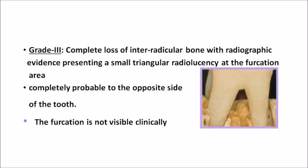Grade three: complete loss of interradicular bone with radiographic evidence presenting as triangular radiolucency. It is a through-and-through defect — when you probe from the buccal you can see the probe on the lingual side. There is through-and-through loss of interradicular bone, but the furcation is not visible clinically. Soft tissue is covering the furcation area, but when you insert the probe you know that the whole bone has been destroyed from the furcation area.